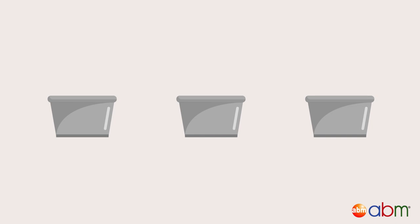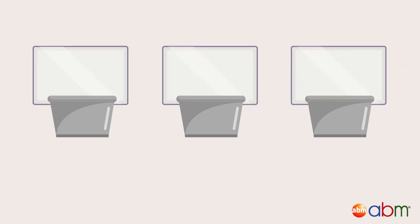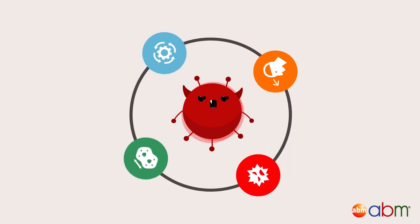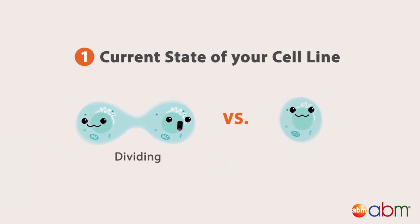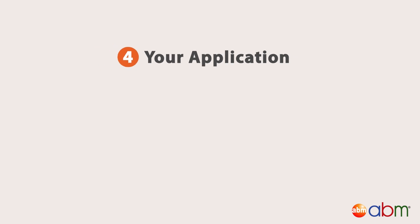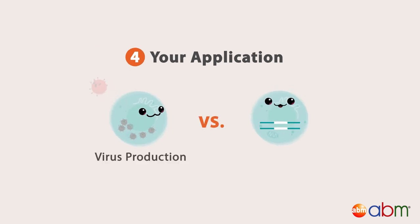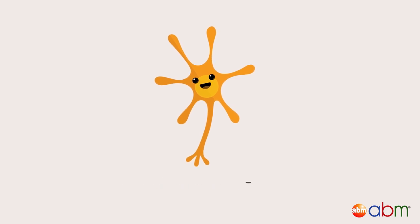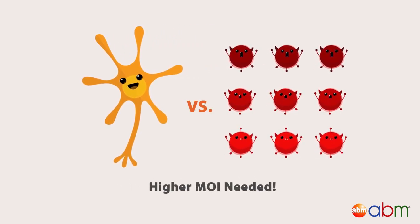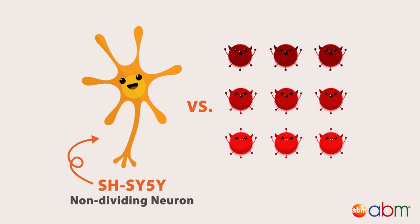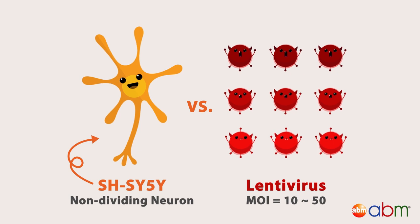There are other factors to consider, such as whether the buckets have backboards that would make it easier to make the shot. Similarly, there are factors that can affect how easily viruses can infect their target cells, such as the current state of your cell line — whether it is dividing or non-dividing — the characteristics of the virus, whether it is a lentivirus or adenovirus, the transduction efficiency, and your application. For example, if the cell is in a non-dividing state, a higher MOI may be needed. This is the case when infecting neuronal cells such as SHSY5Y with lentiviruses for gene delivery, where a much higher MOI of 10 to 50 can be required.